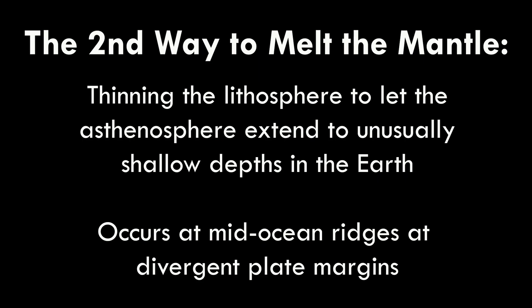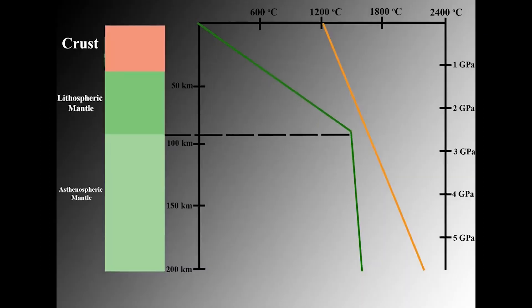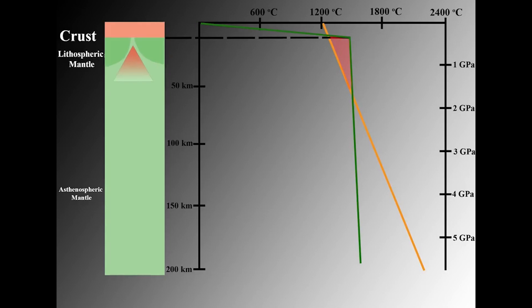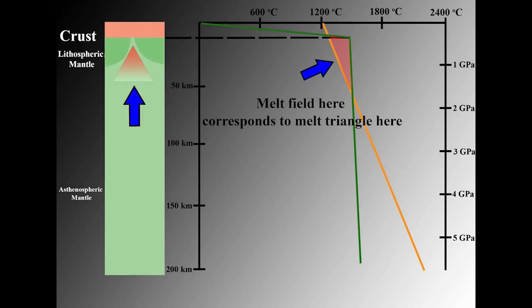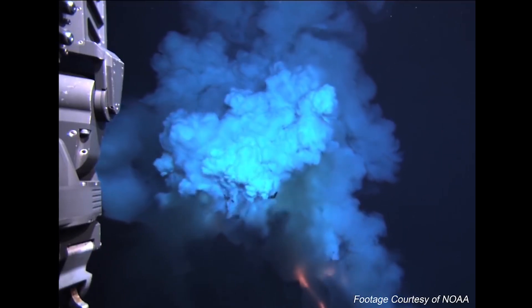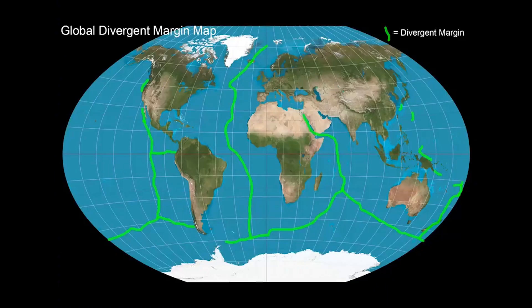The second way to partially melt the mantle is by letting the adiabatic temperature gradient of the asthenosphere extend to unusually shallow depths in the earth. This requires thinning the lithosphere, as in the case of mid-ocean ridges at divergent plate margins. As the lithosphere thins, the geotherm changes in response. If the lithosphere thins sufficiently, the geotherm can cross the solidus and partial melting occurs. This lava erupting in the Lau basin was formed by decreasing pressure on the mantle. Here's the global distribution of divergent margins. This style of melting is associated with plate tectonics.